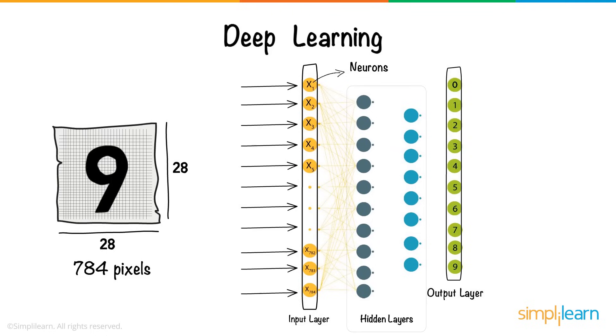The information is transferred from one layer to another over connecting channels. Each of these has a value attached to it, and hence is called a weighted channel.